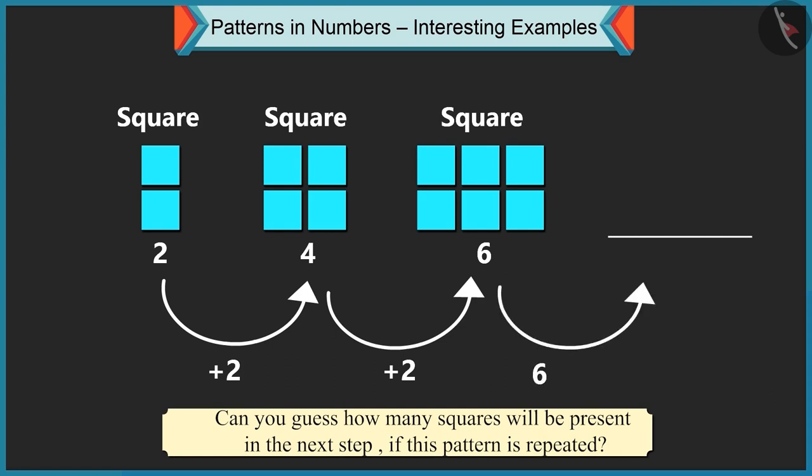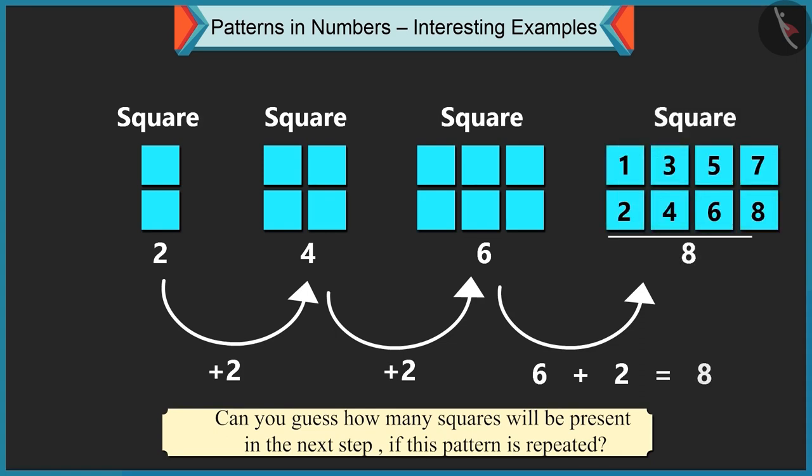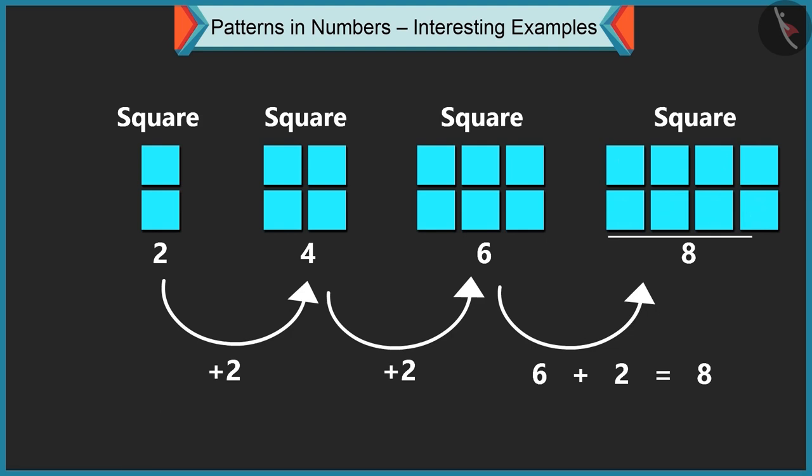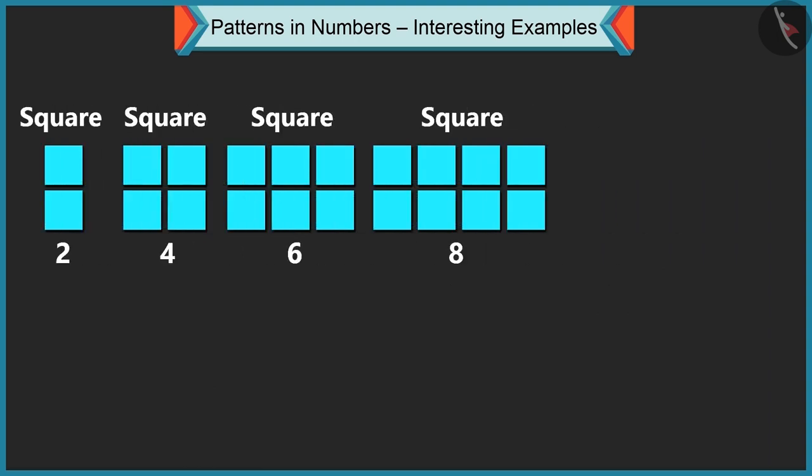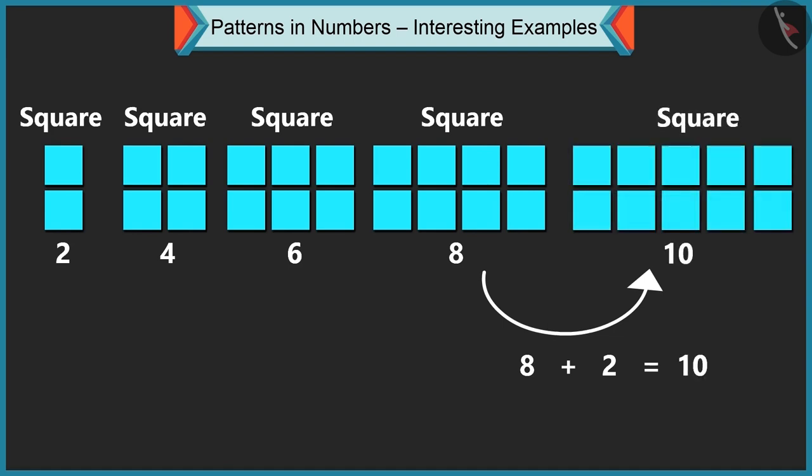Currently the pattern has six squares. Adding two more squares, seven and eight. This means there will be eight squares in the next step. Oh wow! Well done! Similarly, in the next step, adding two squares to eight will make it ten squares. So children, this is how we proceed with this pattern.